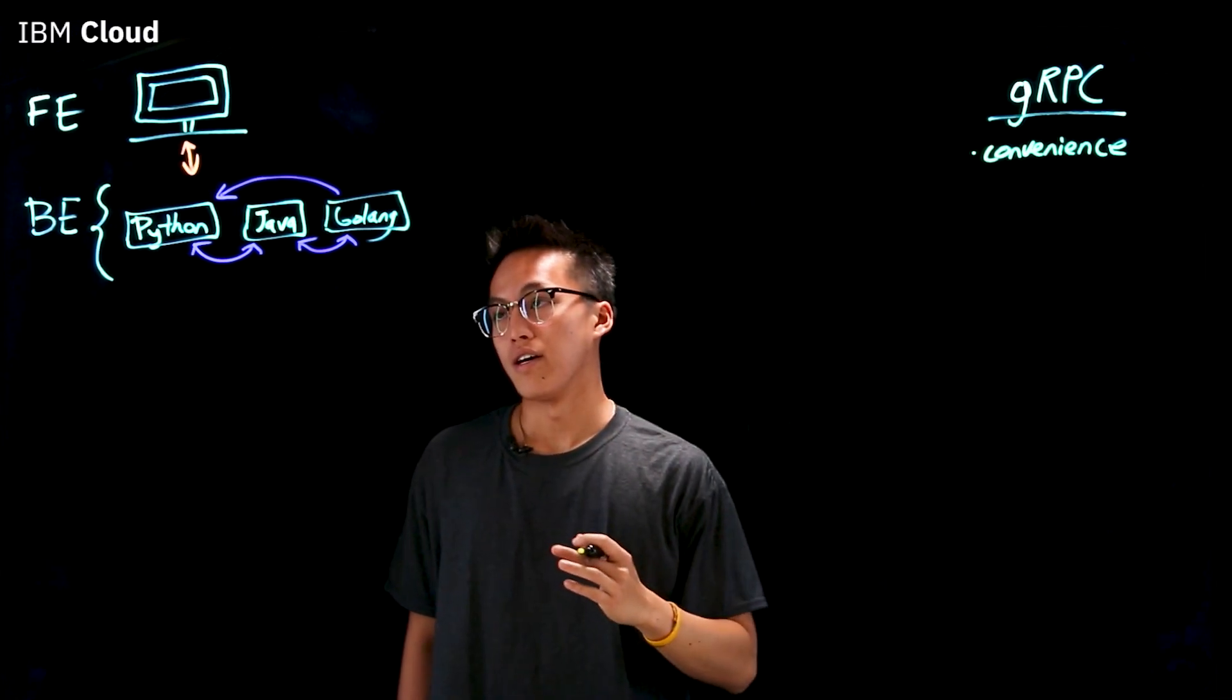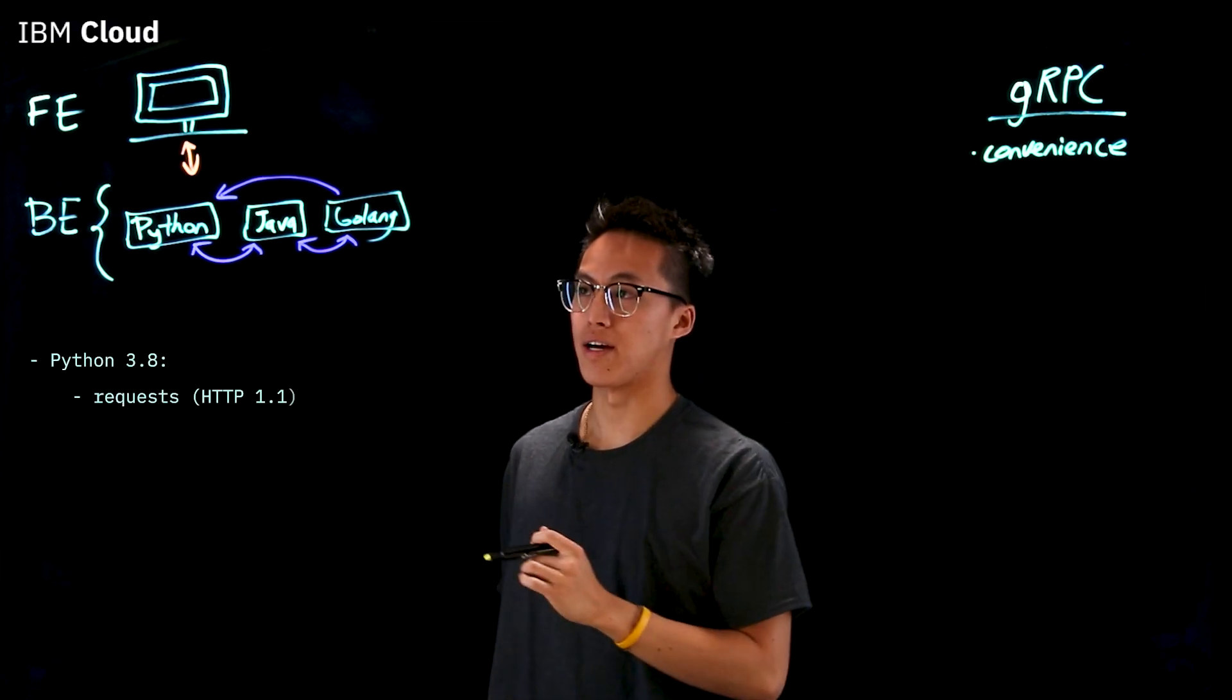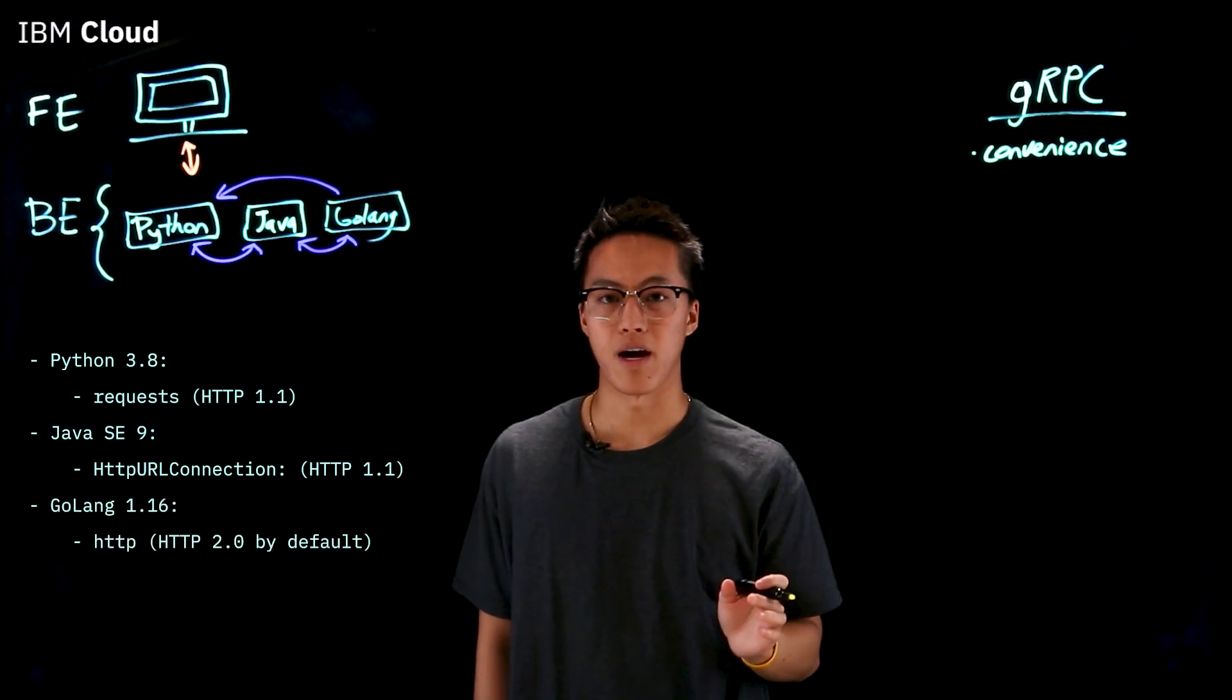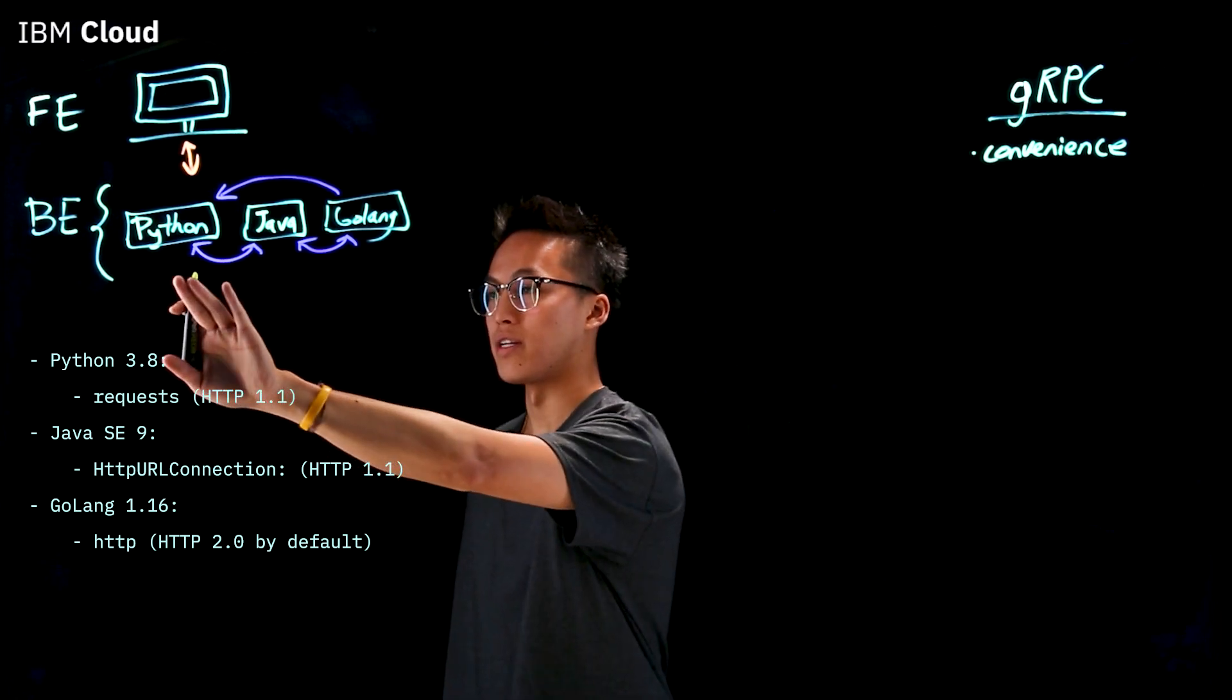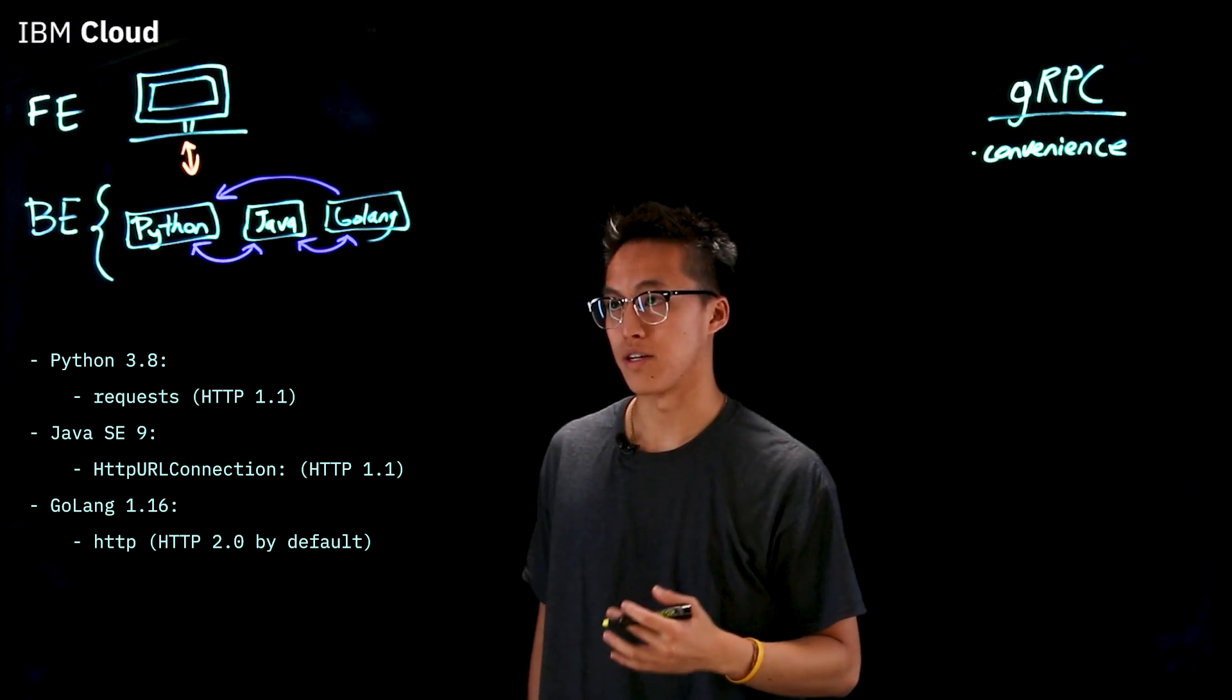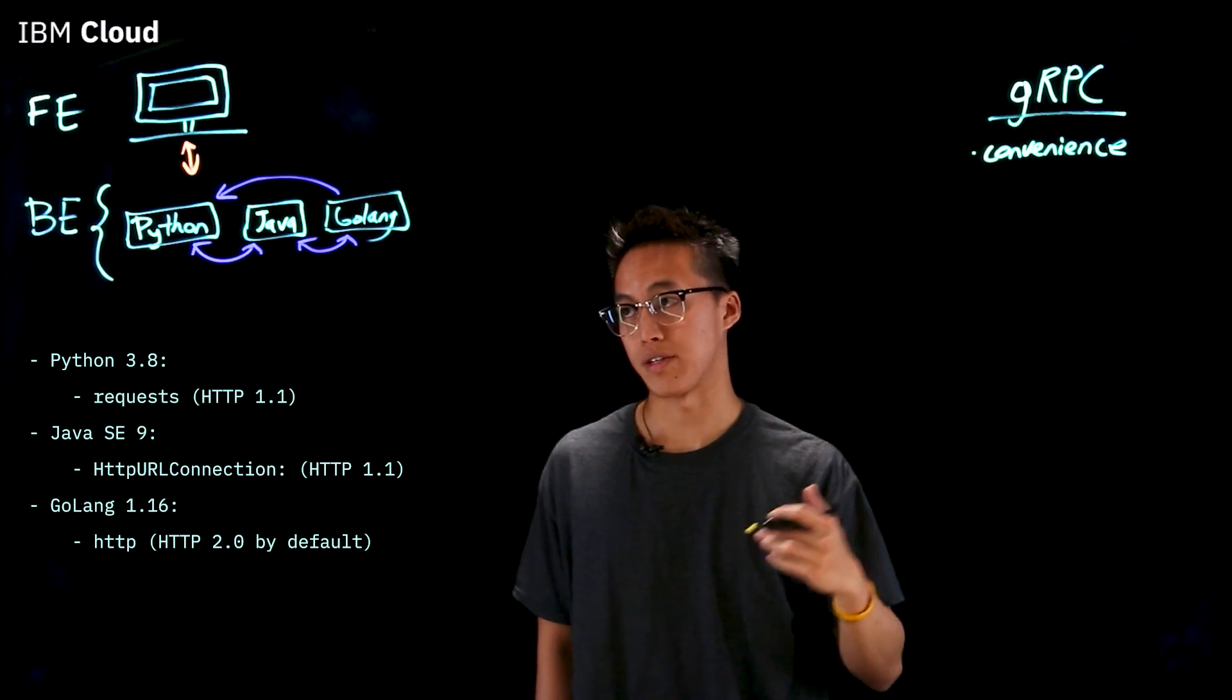If we were to not use gRPC, it would be important to note that Python has its own HTTP client libraries, Java has its own, Golang has its own, and these are client libraries that are supported by different groups. If we were to extend them, it would be different individuals working to maintain these client libraries, and it could get out of hand, especially as we add more microservices that could be of different runtimes in different languages.